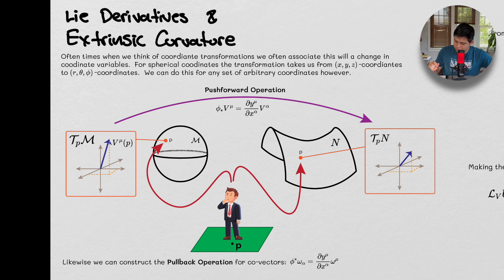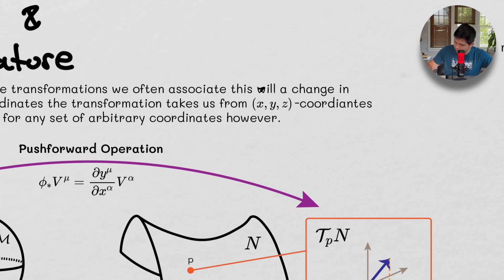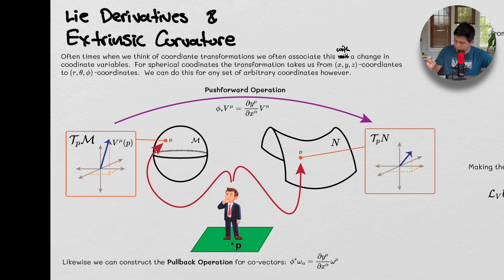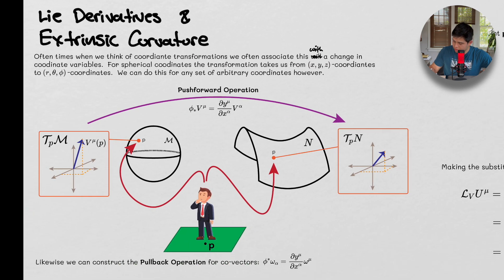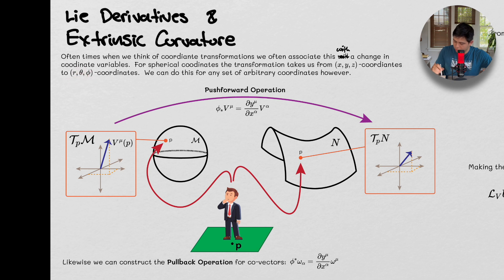So oftentimes when we think of coordinate transformations, we often associate this with a change in coordinate variables. For spherical coordinates, the transformation takes us from x, y, z coordinates to r, theta, azimuthal coordinates, and we can do this for any set of arbitrary coordinates.